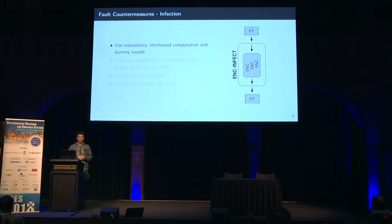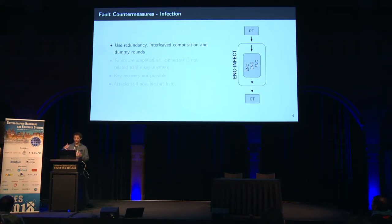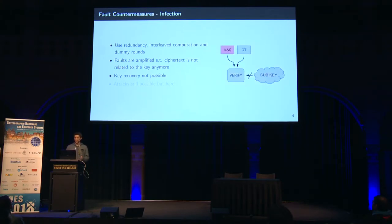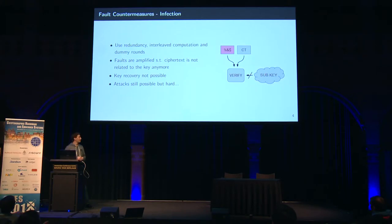There are also different kinds of fault countermeasures other than detection-based ones. In an infection-based countermeasure, you also use redundancy but with interleaved computation and usually dummy rounds. The idea is that once an attacker injects a fault, this countermeasure amplifies it such that the faulty output is not related to the key anymore. This means if an attacker tries to combine a correct and faulty ciphertext, there's no meaningful way to do so. There are still attacks that can break such a countermeasure, but they usually require higher assumptions on the attacker.